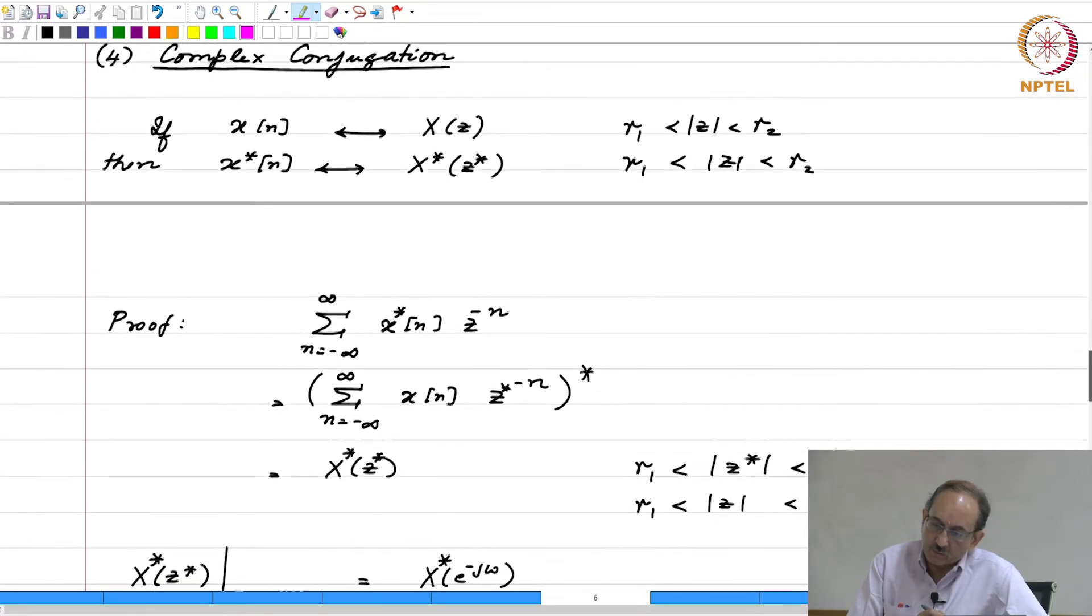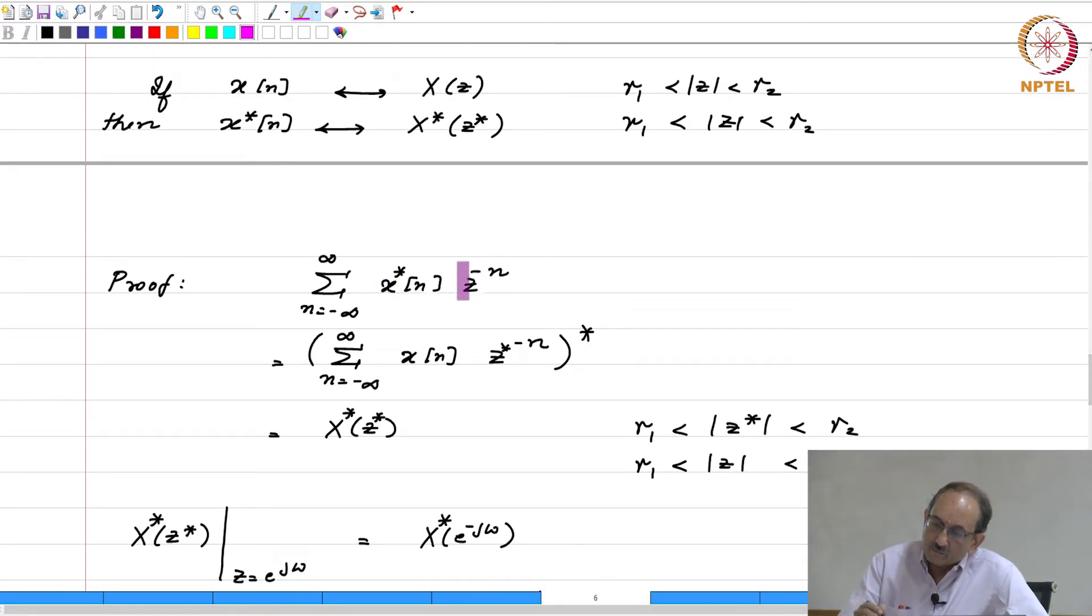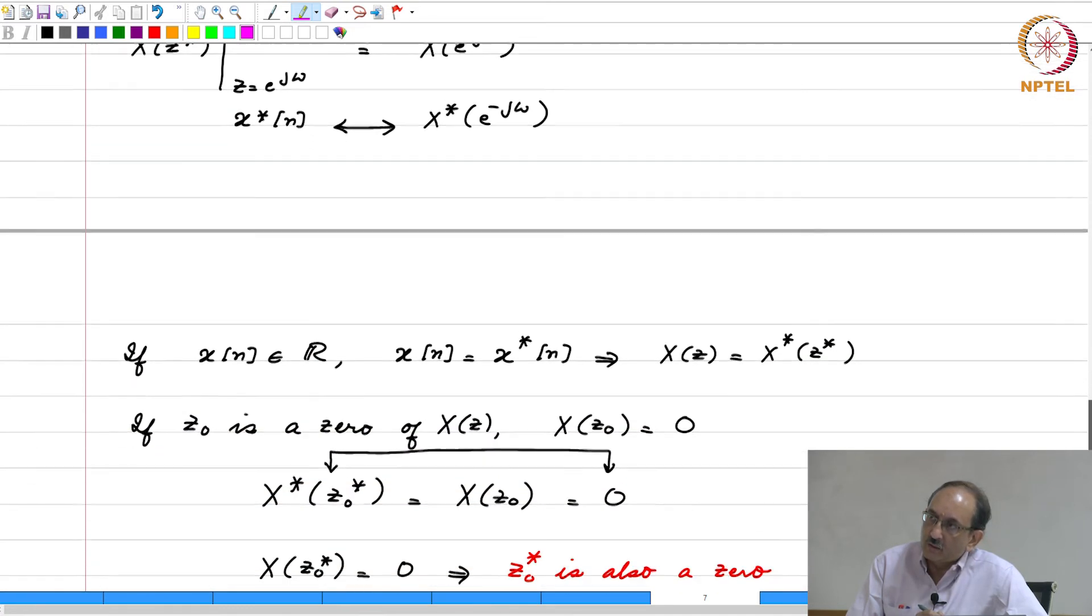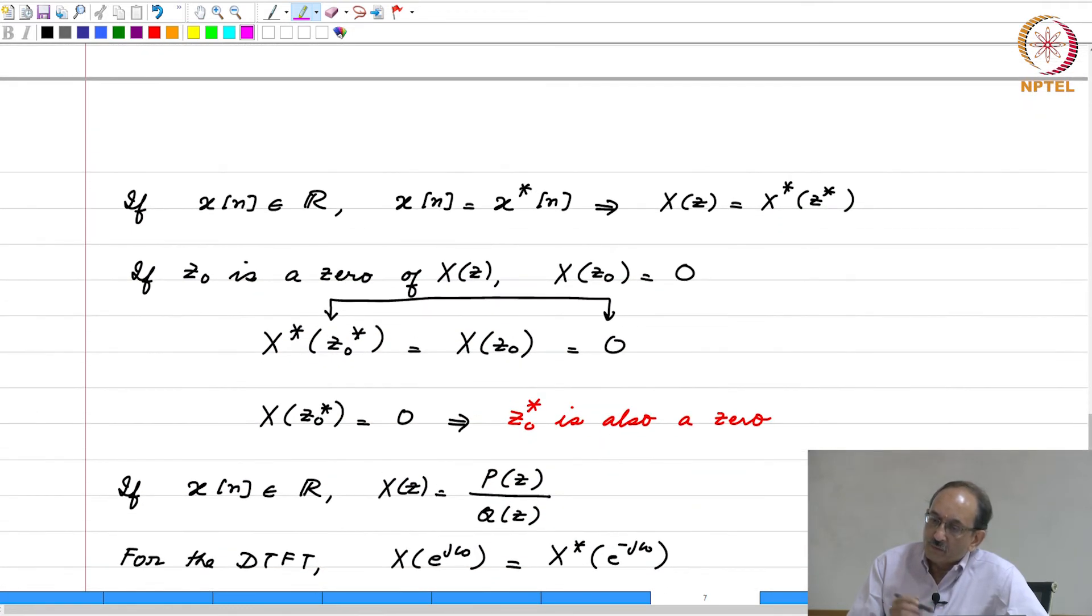That is not surprising because, if you look at this, just from the plain definition, this is x of n times z to the minus n summed up over all n. If x of n were real and if z also were real, the quantity has to be real. That is another way of seeing this. These are some of the inferences that can be drawn from the z transform. But typically, this property is exploited in the case of DTFT for real valued sequences, where half the information is enough.